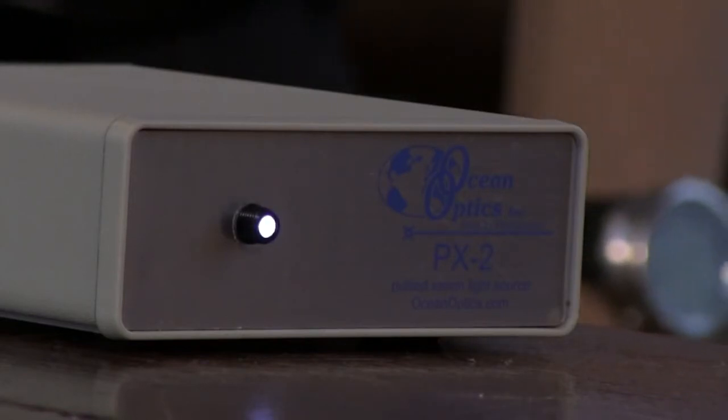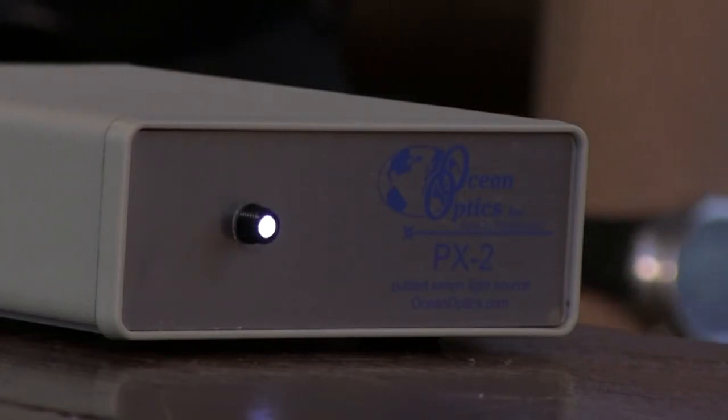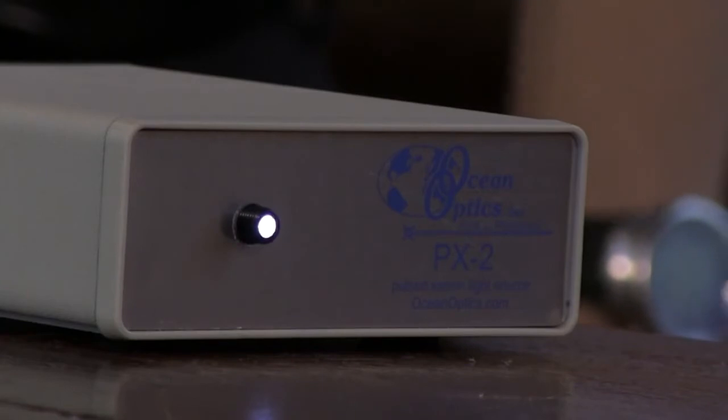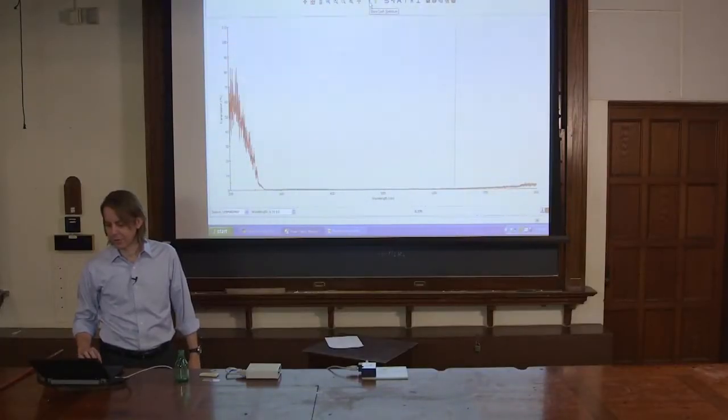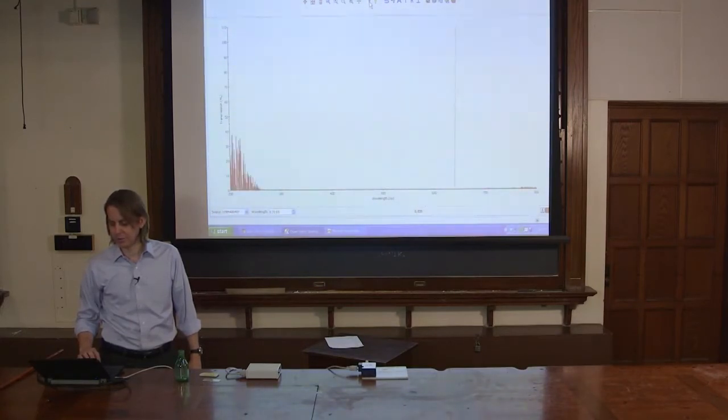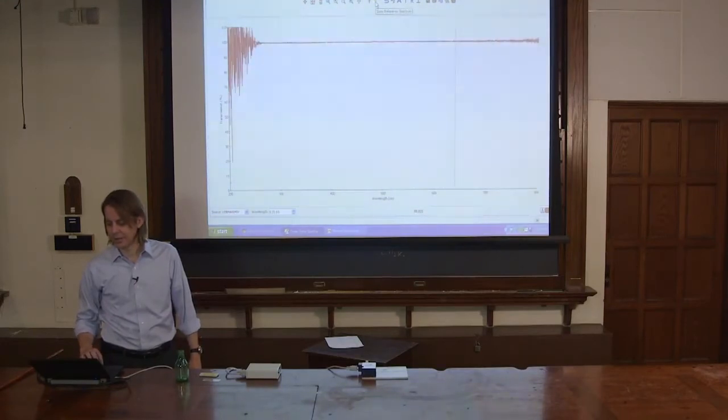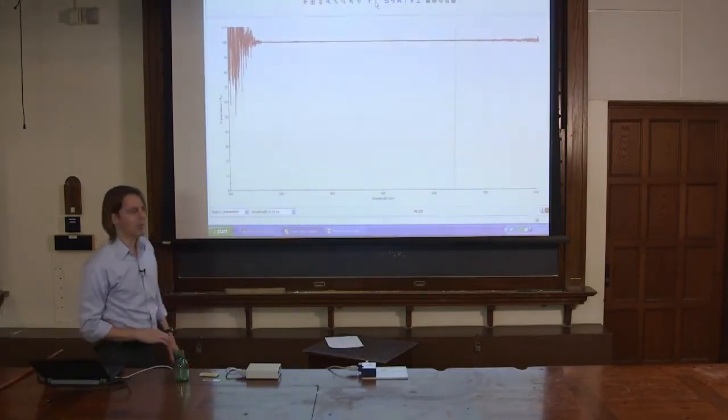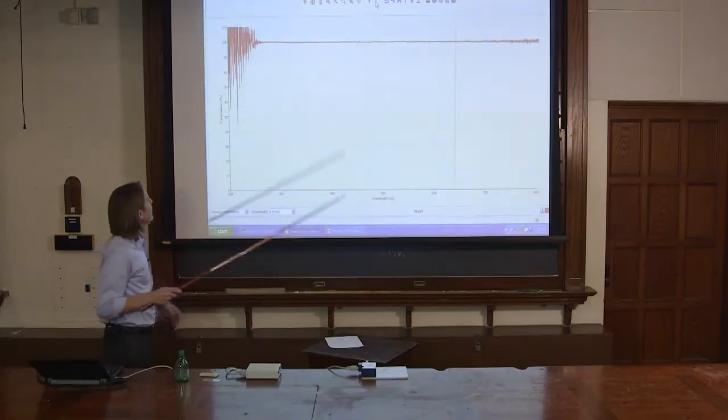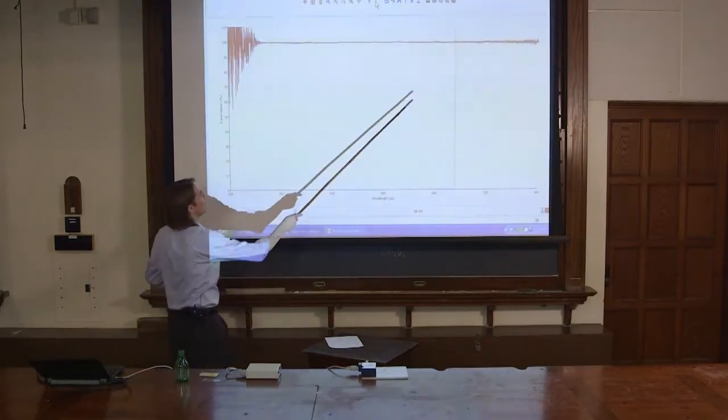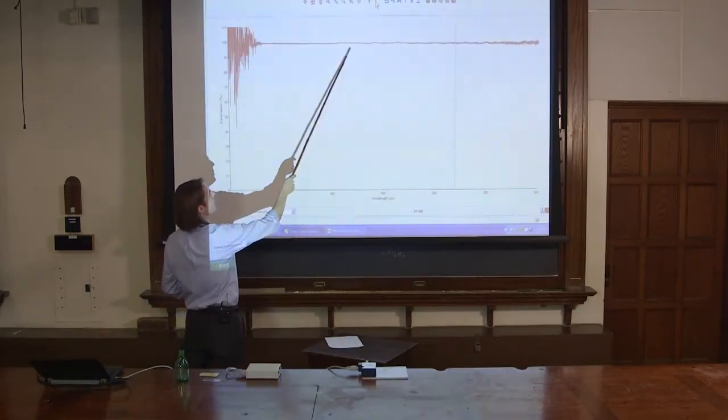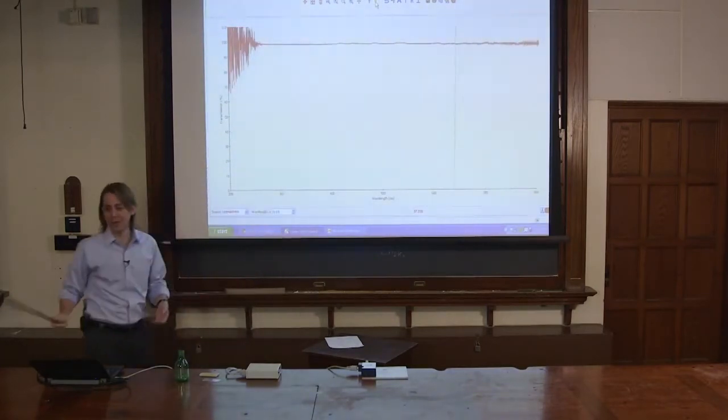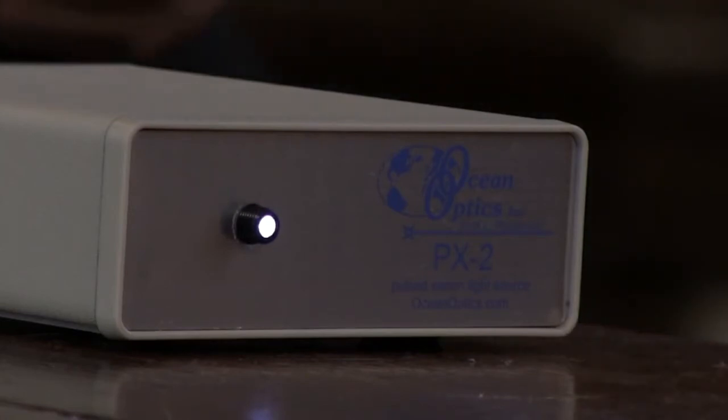So we turn the lamp on, and we calibrate it real quick, so we hit that, turn the lamp off for a second, we'll get a dark reference here. Everything drifts, so it's always good to redo it at the last minute. Turn it back on, and get another bright reference. And now what you're seeing is we've calibrated it, where it's giving us 100% transmission as it just goes through air. It's drifting up and down a little bit. Everything's not perfectly stable.